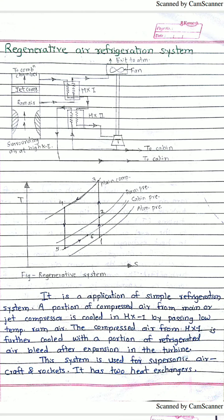Welcome back to the next lecture on refrigeration and air conditioning. In the last lecture we discussed the aircraft refrigeration system, selecting four methods: simple air refrigeration system, bootstrap air refrigeration system, regenerative air refrigeration system, and reduced ambient air refrigeration system. The previous two methods were already covered, so today we will discuss the third method — the regenerative air refrigeration system.